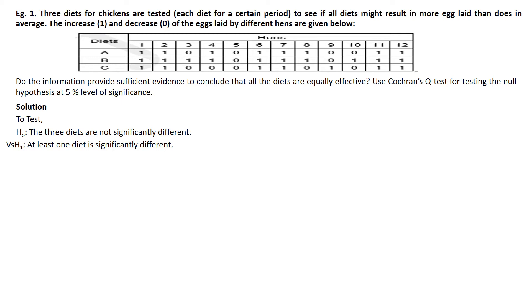In the solution, I am going to test the hypotheses. The null hypothesis is that the three diets are not significantly different. The alternative hypothesis is that at least one of the diets is significantly different.